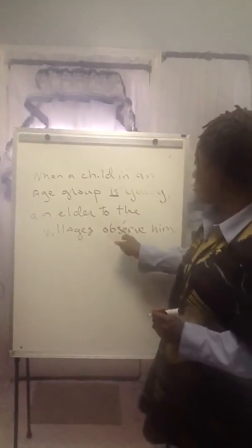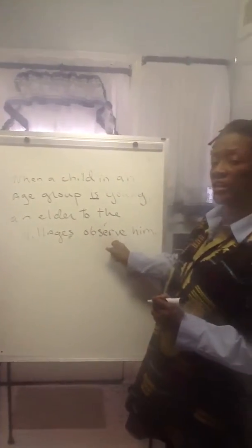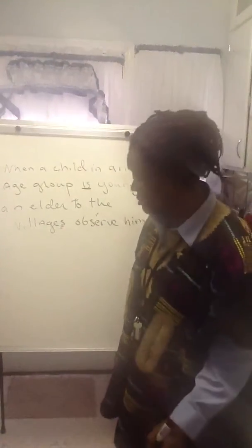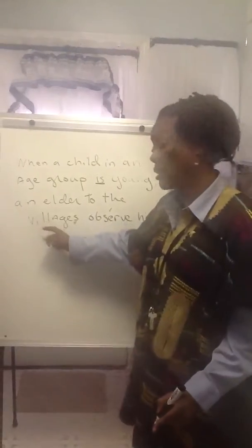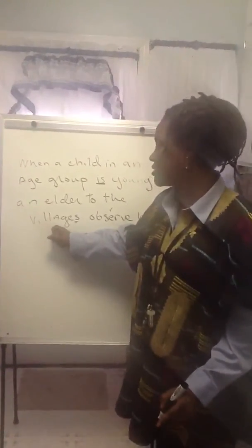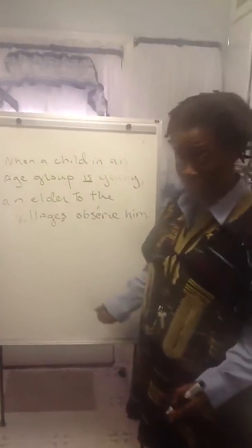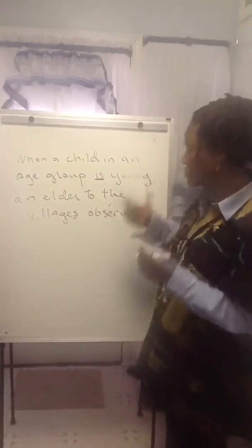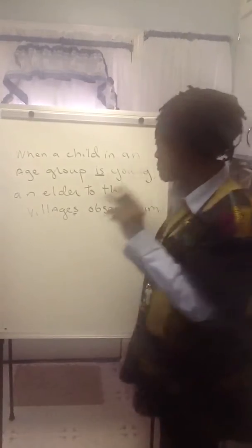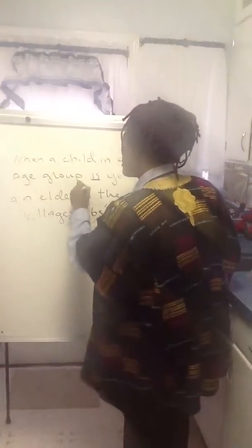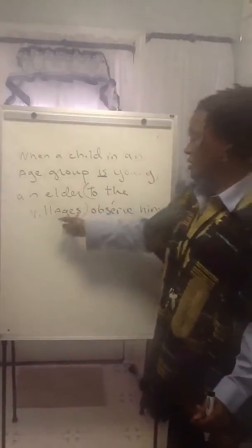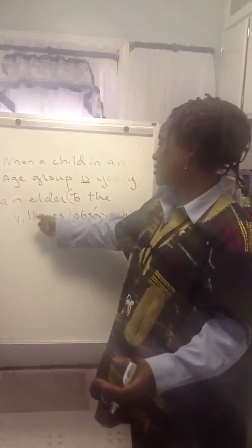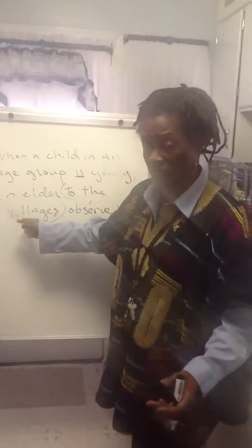Now the question becomes: do you put an S on the end of the verb? And to do that, you've got to locate the subject. What is the subject? Most people say the subject is 'villages,' because it's a noun. Nouns are subjects — 'villages observe him.' Problem. 'To the villages' is a prepositional phrase.